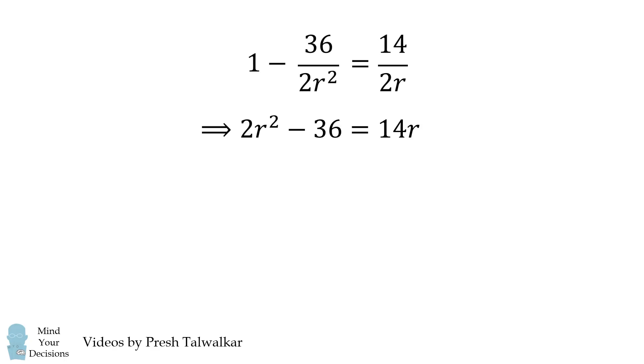We now multiply both sides by 2r squared, and then simplify this quadratic equation. Since the radius has to be greater than 0, we get the solution that r is equal to 9.